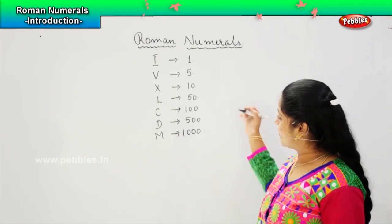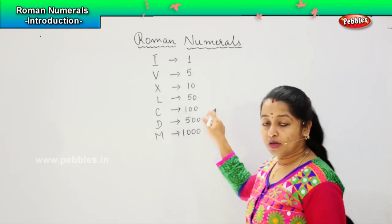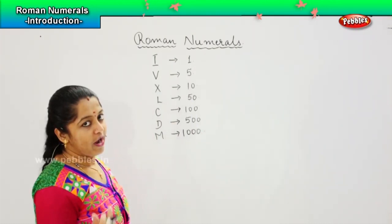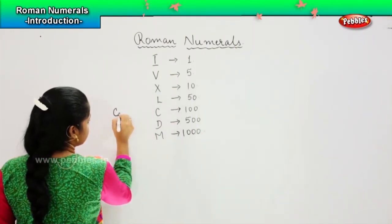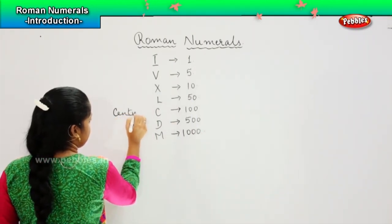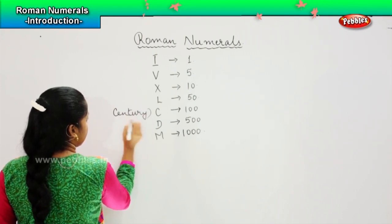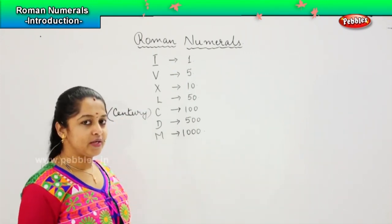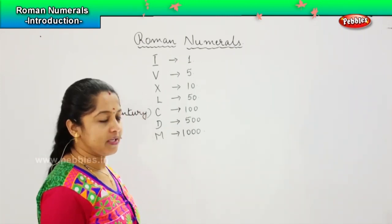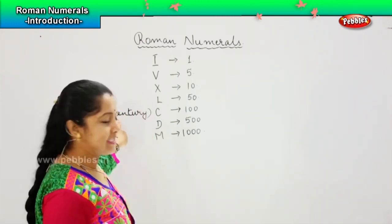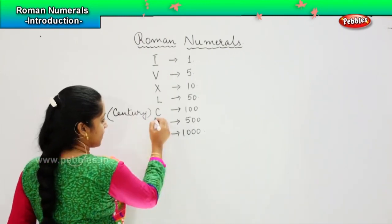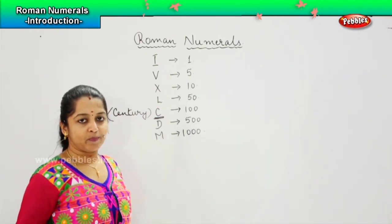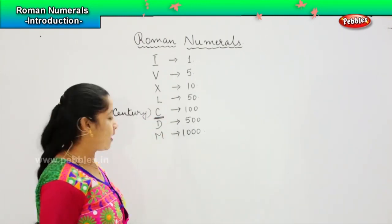Now, if you see here, C is for 100. So if you have to remember, you can just remember the word century. I hope you all watch cricket. A hundred runs means century, right? So if you know the word century, it is easy for you to memorize the value of C which is 100.